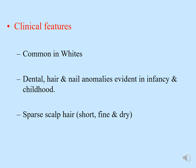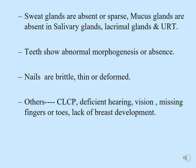The clinical features are most commonly seen in the white population. Since it affects all ectodermal structures, there is a defect in teeth, hair, and nails, which is evident since infancy and childhood. Patients have sparse scalp hair, usually short and fine. Sweat glands are absent or sparse; mucous glands are absent in salivary glands and the upper respiratory tract, giving rise to xerostomia. Teeth show abnormal morphology or absence. Nails are brittle, thin, or deformed. Other features noted in some cases include cleft lip and cleft palate, deficient hearing and vision, missing fingers or toes, and lack of breast development.